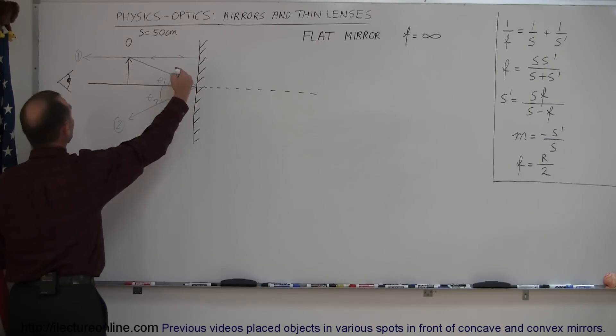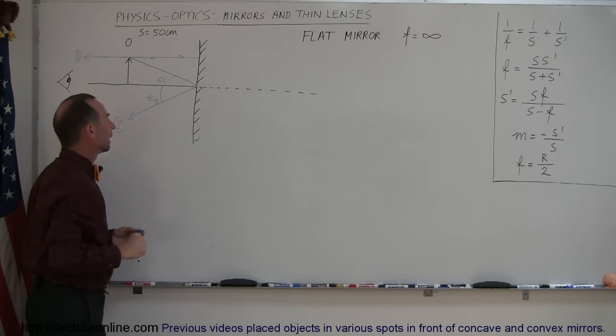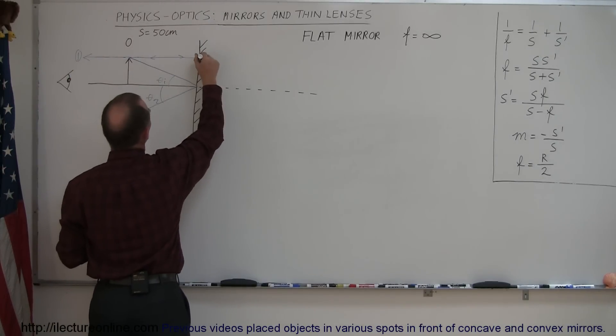Again, the two rays that leave the mirror, one going parallel to the normal, the other one coming down here, they're not converging. So, they're not forming an image over here, but the brain looks at these two rays coming from the mirror, and it says,